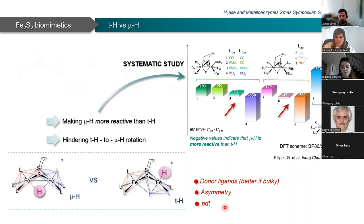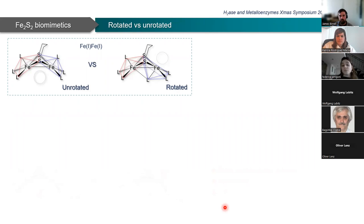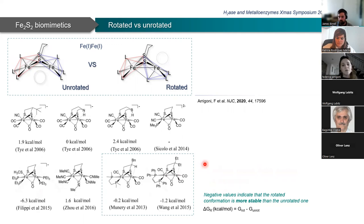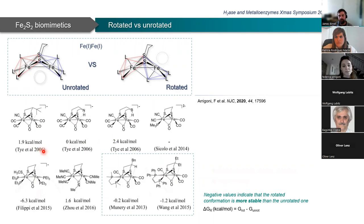We did something similar this year on the rotated-unrotated issue. A lot of effort has been made in the past: these slides collect all examples where rotated conformation has been predicted to be more stable or close in energy to a non-rotated one—referring to fully rotated conformation, as there are also examples of semi-rotated. Examples were proposed by groups of Darensbourg, Lubitz, Weigand, and others. Two in the box have been experimentally characterized by Tom Rauchfuss and Philippe Schollhammer. All values come from DFT calculations obtained in different years, essentially from us and from Tye and Hall in 2006, who made a pioneering contribution on this topic.